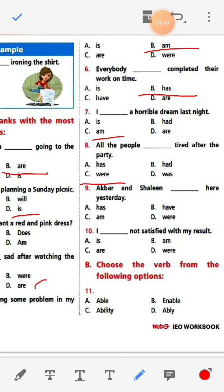Number nine: Akbar and Salin dash here yesterday. It is plural form, so: Akbar and Salin were here yesterday. Number ten: I dash not satisfied with my result. After 'I' we always use 'am' — I am not satisfied with my result.